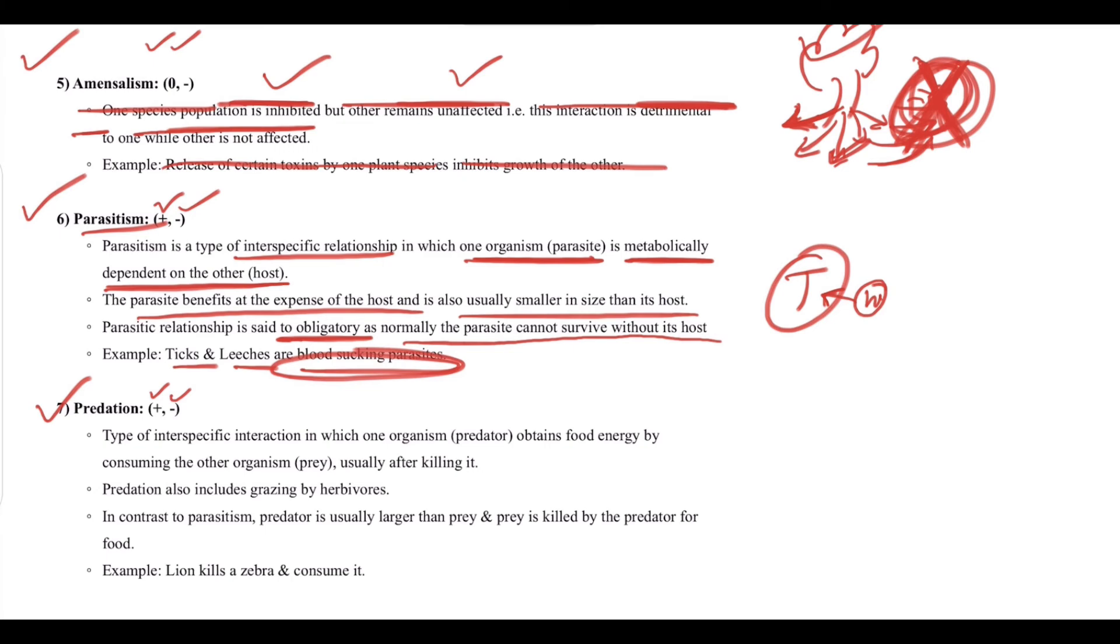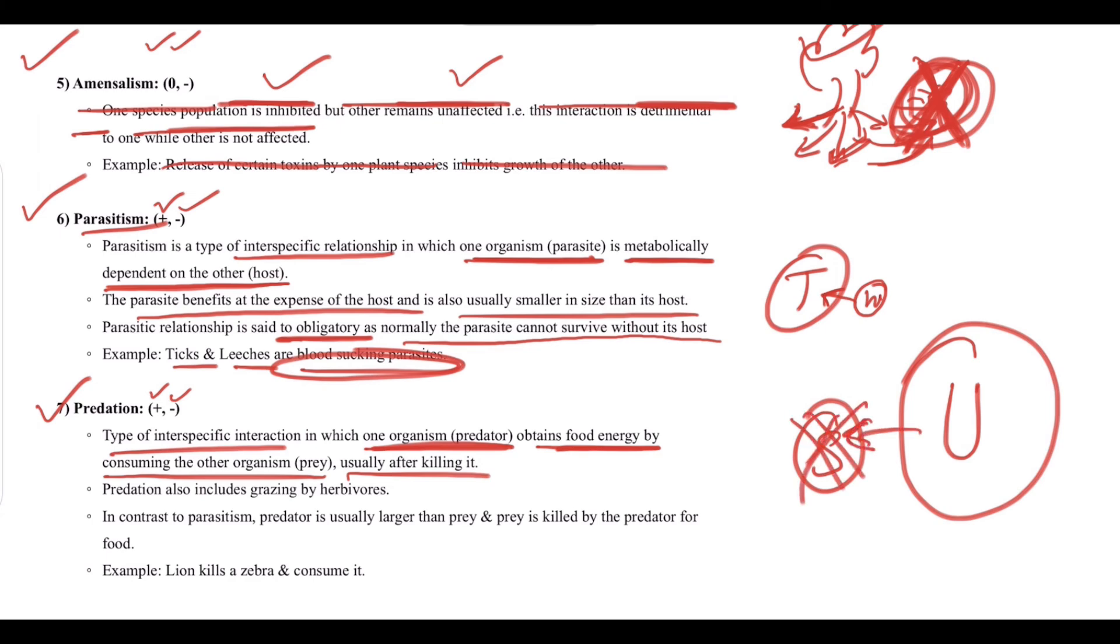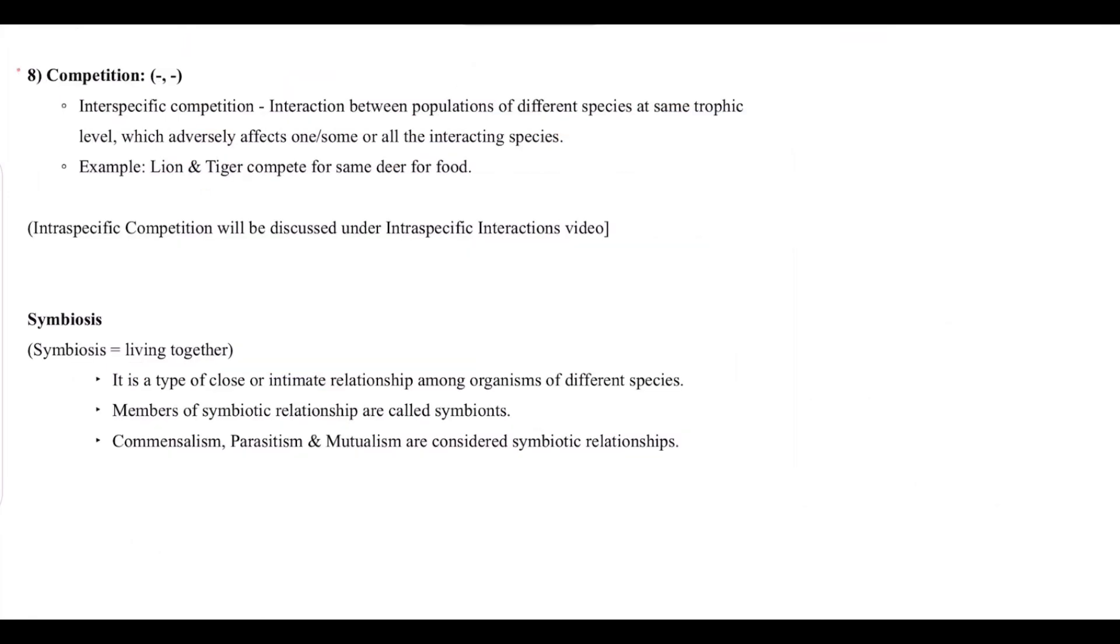Next we have predation, which is also positive negative. This is a type of interspecific interaction in which one organism, the predator, obtains food energy by consuming the other organism, the prey, usually after killing it. Predation also includes grazing by herbivores. In contrast to parasitism, predator is usually larger than prey and prey is killed by the predator for food. For example, lion kills zebra.